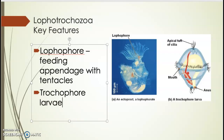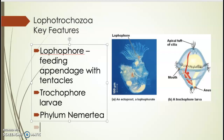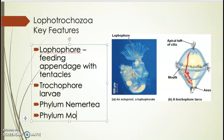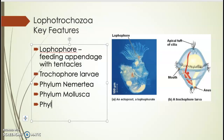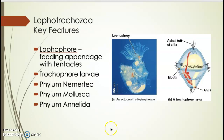Within Lophotrochozoa there are three phyla I want you familiar with: Nemertea, Mollusca — which will be a fun phylum to discuss — and Annelida, the worms. Those are the three key phyla within Lophotrochozoa, which are part of Spiralia, which are part of protostomes.